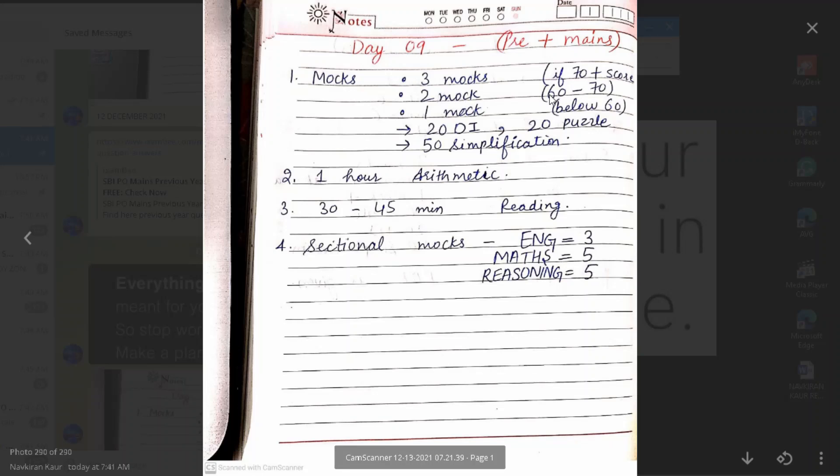And if you are getting below 60 marks, then you will have to focus on 1 mock. And after that, you will have to solve 20 DIs, 20 puzzles, 50 simplifications questions. And after that, you will have to focus on your speed.